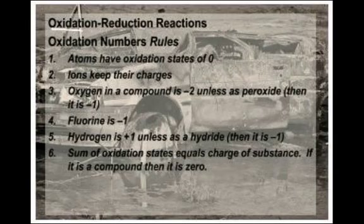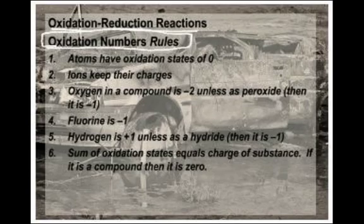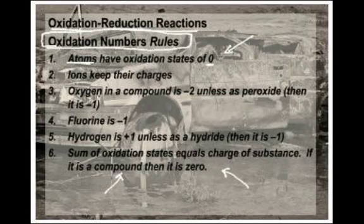Oxidation reduction reactions involve something called oxidation numbers. So before we can really talk about what an oxidation reduction reaction is, we have to understand how to do the oxidation number rules. Every element in a compound, and actually even an element in its pure form, has an oxidation number, and there is a set of rules whereby you assign an oxidation number to a particular element. Oxidation states: if you have a pure atom, it has an oxidation state of zero — like a zero charge. It's kind of like charge, but not exactly the same.